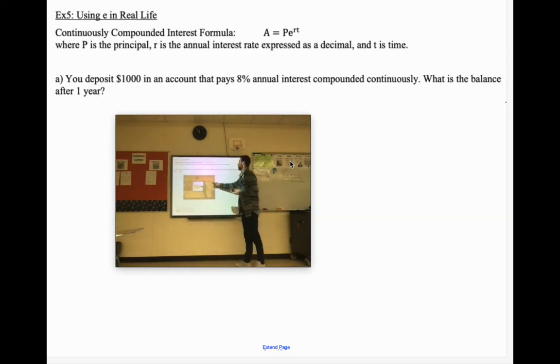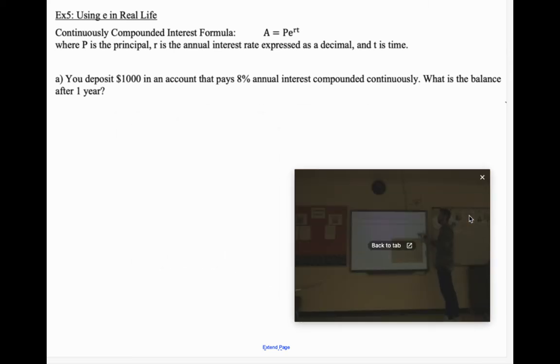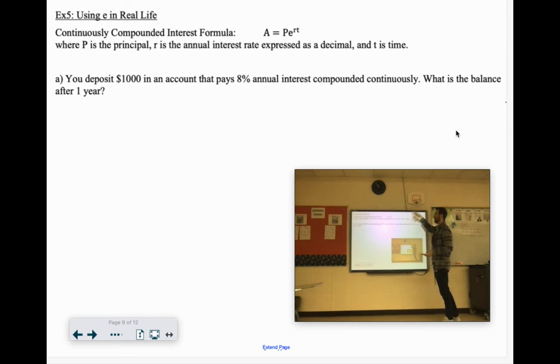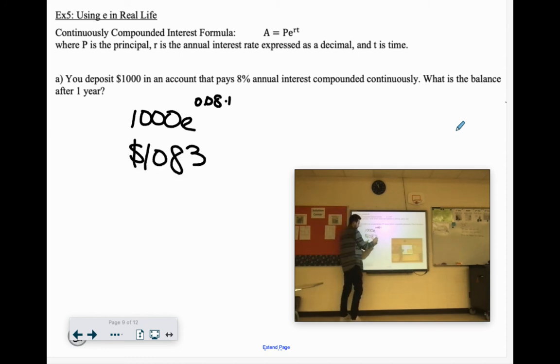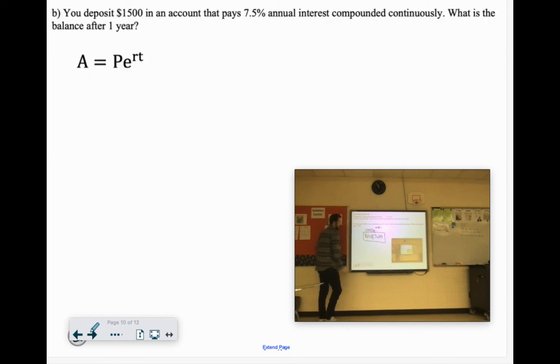We have three of these problems with compounded interest. You have P times e to the RT power. Rate has to be as a decimal. T is the time, of course. We deposit $1,000. That's our P times e to the RT. It's 8%. So 0.08 times the time, one year. So we just go ahead and chuck that in our calculator. 1,000 times e to the 0.08 power. And it comes out to $1,083.29. It's not too bad. Once you drop it in the formula, your calculator does it for you.